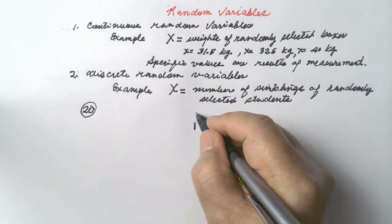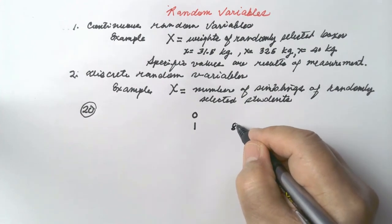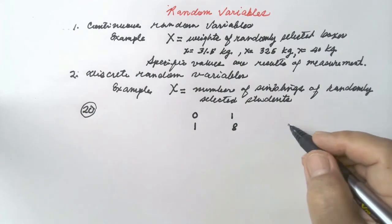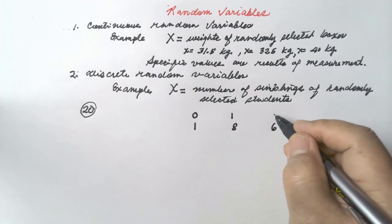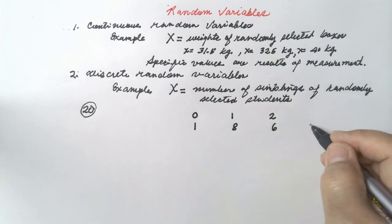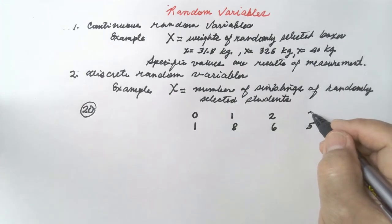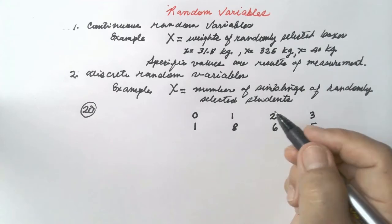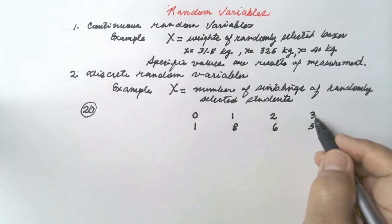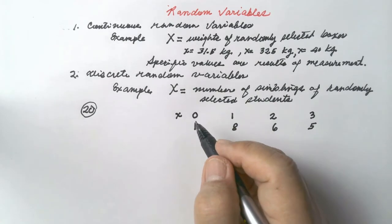Out of the 20 students, it was found that 1 has no sibling — so 0 siblings. 8 of them have 1 sibling. 6 of them have 2 siblings. And 5 of them have 3 siblings. These specific values should be represented by the lowercase letter x.